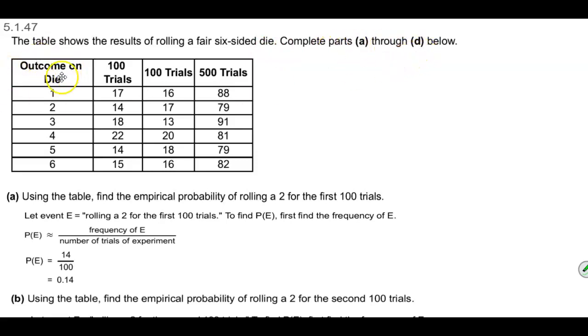The outcome on the die is the first column which goes from one through six. Here are the 100 trials, and then you have 500 trials.